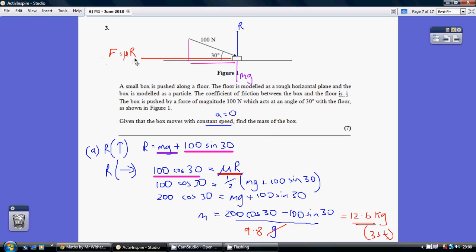Our friction is the coefficient of friction, which we're given as a half, times the normal reaction that we've just worked out. So that is a half times R, R being this up here.